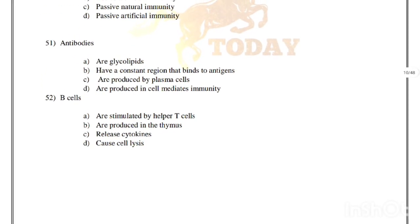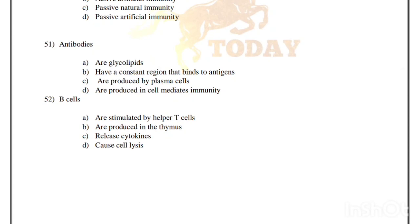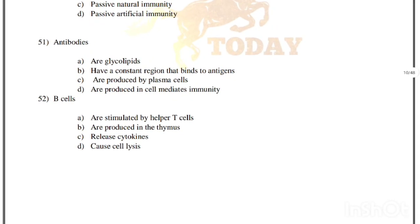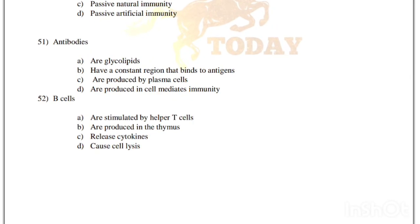Antibodies are: glycolipids with a constant region that binds antigens; have a constant region that binds to antigens; are produced by plasma cells; or are produced in cell-mediated immunity. Correct answer: antibodies are produced by plasma cells, option C.